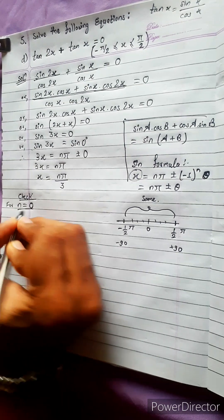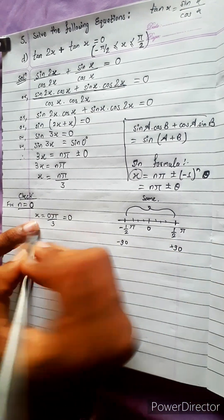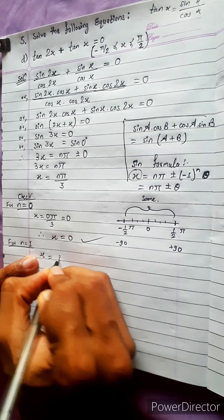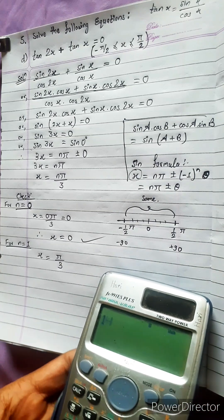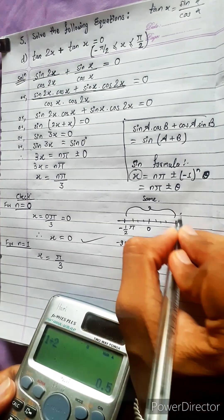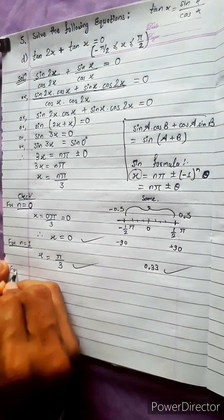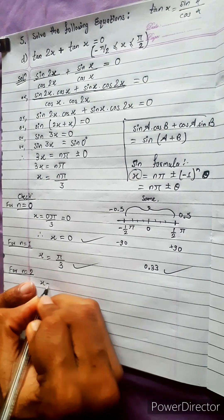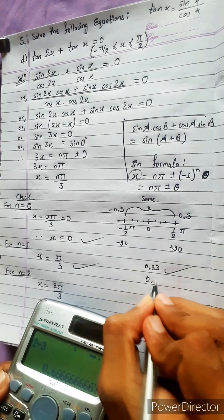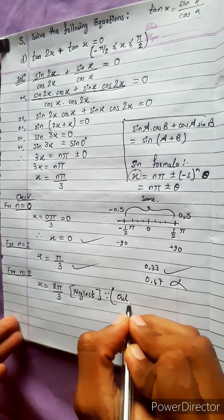Let's check. For n equals 0: x equals 0, which is possible. For n equals 1: x equals π/3, which is approximately 0.33, and it lies within the range [−0.5, 0.5], so this is also an answer. For n equals 2: x equals 2π/3, approximately 0.67, which does not lie in range, so neglect — it is out of range.